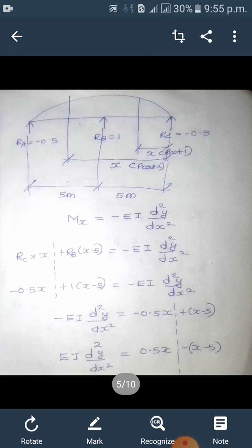Having these reactions and marking the values on the diagram, now we proceed to find moment X. Moment X equals minus EI d²y/dx². For the first part it is RC times x, and for the second part it is RB times (x minus 5). So RC equals minus 0.5, RB equals plus 1. We apply those values and simplifying we get EI d²y/dx² equals 0.5x minus (x minus 5). The dotted line is for the second part.